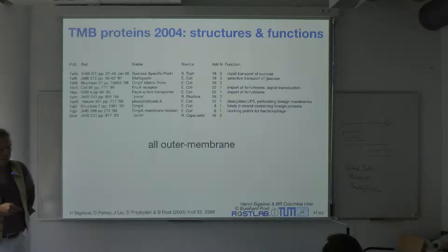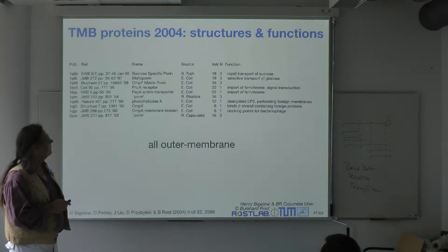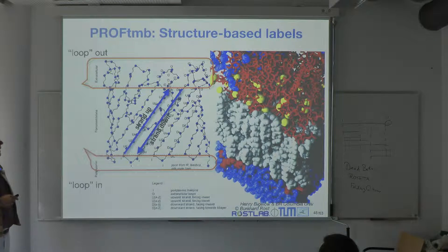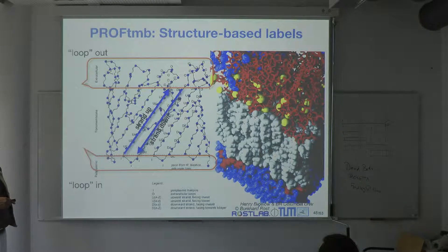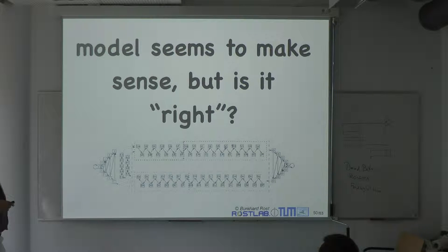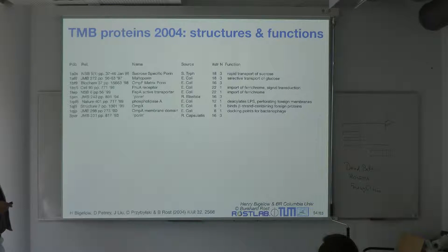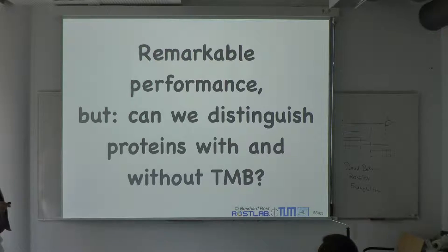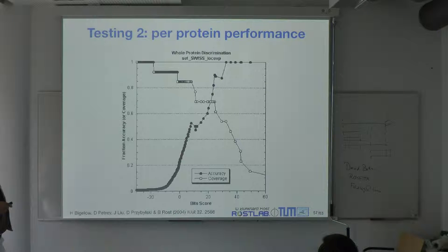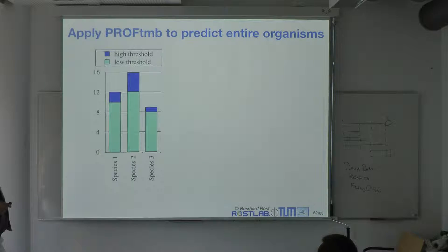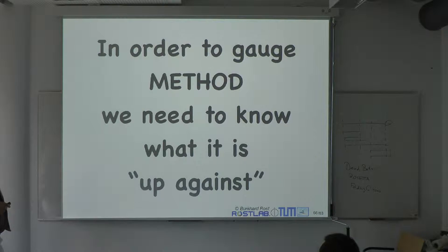You can build a model that essentially uses a Bayesian network or a Markov model to model the strands going up and down. We talked about the problems of assessing such a model when you have very little data. We found it has a remarkable performance and applied it to entire datasets — I'm going to skip that part.